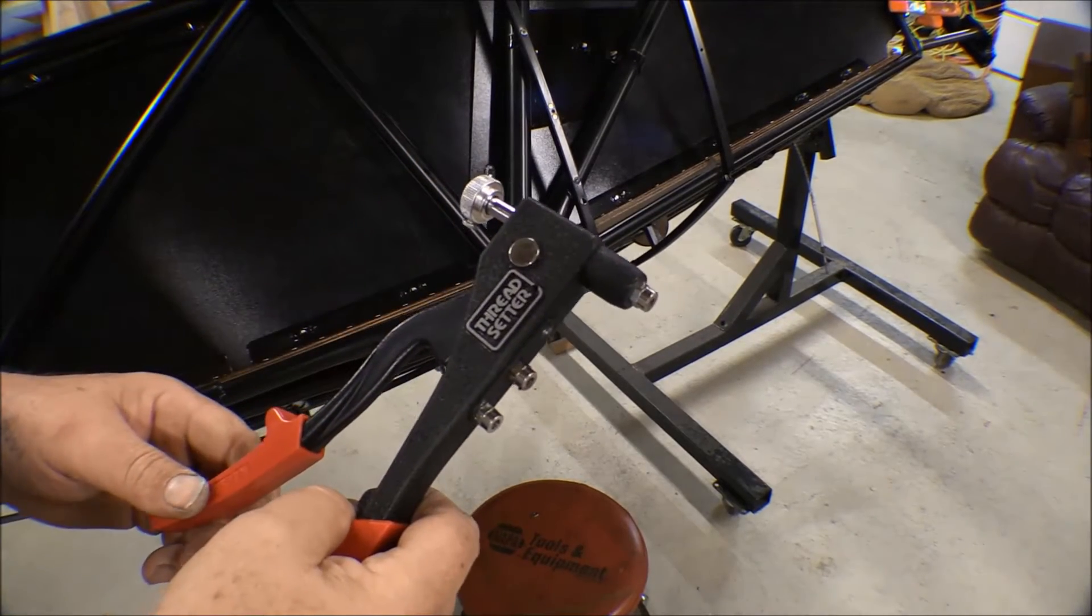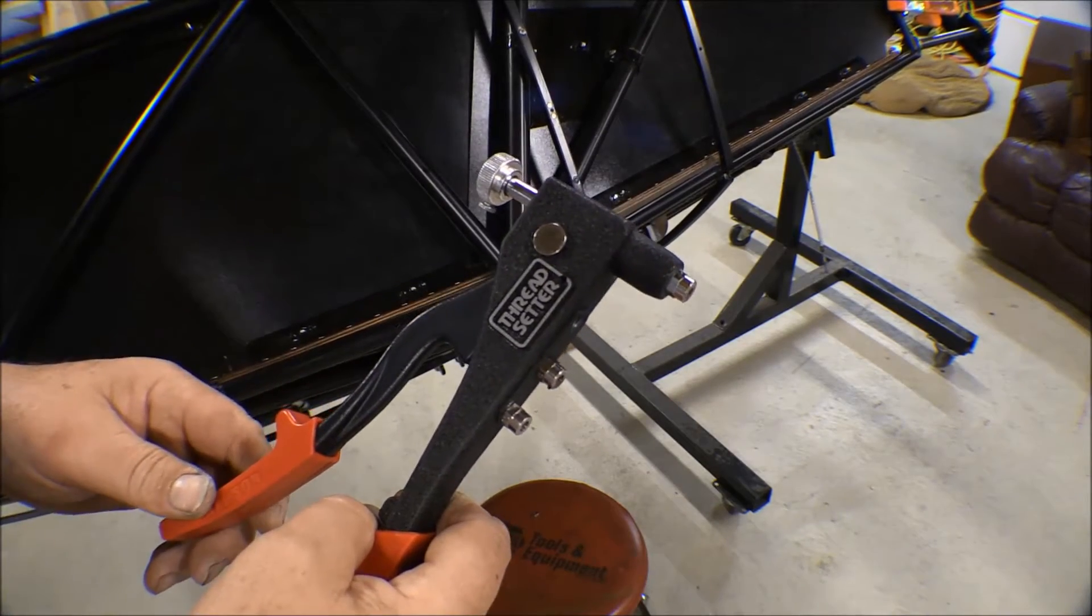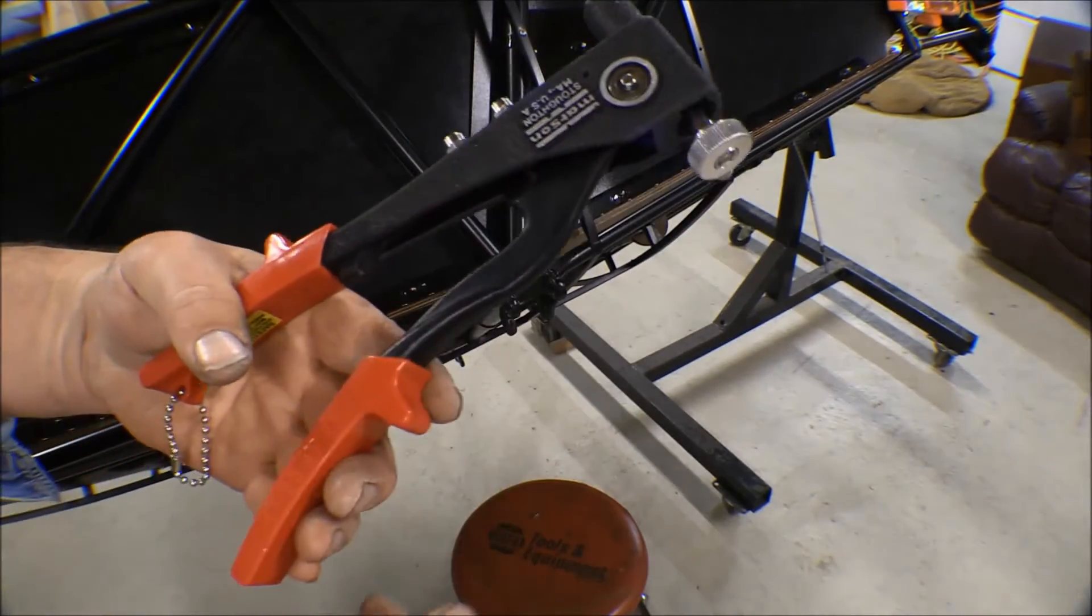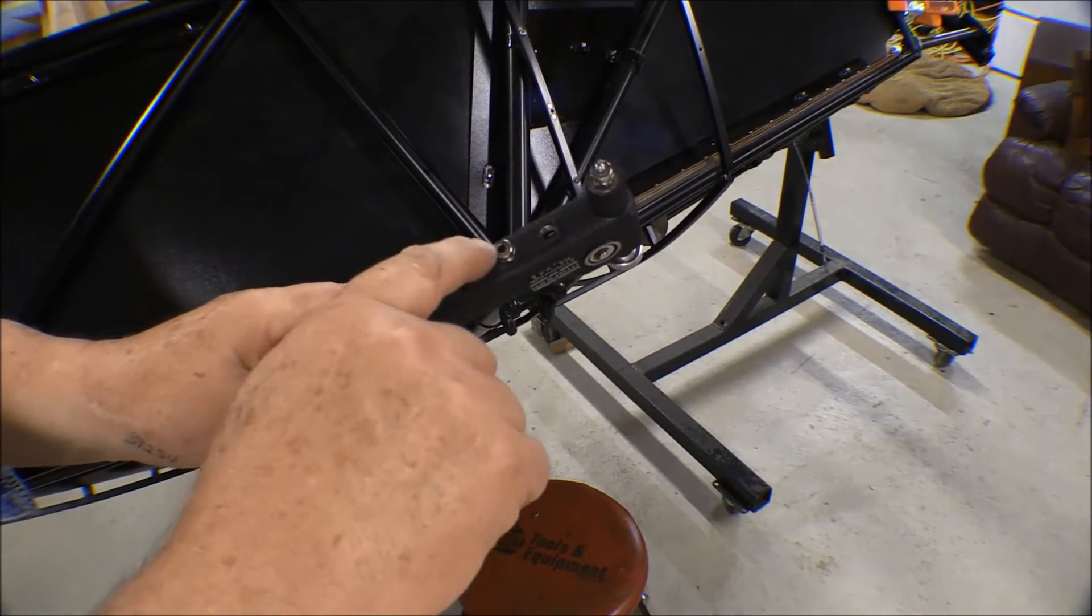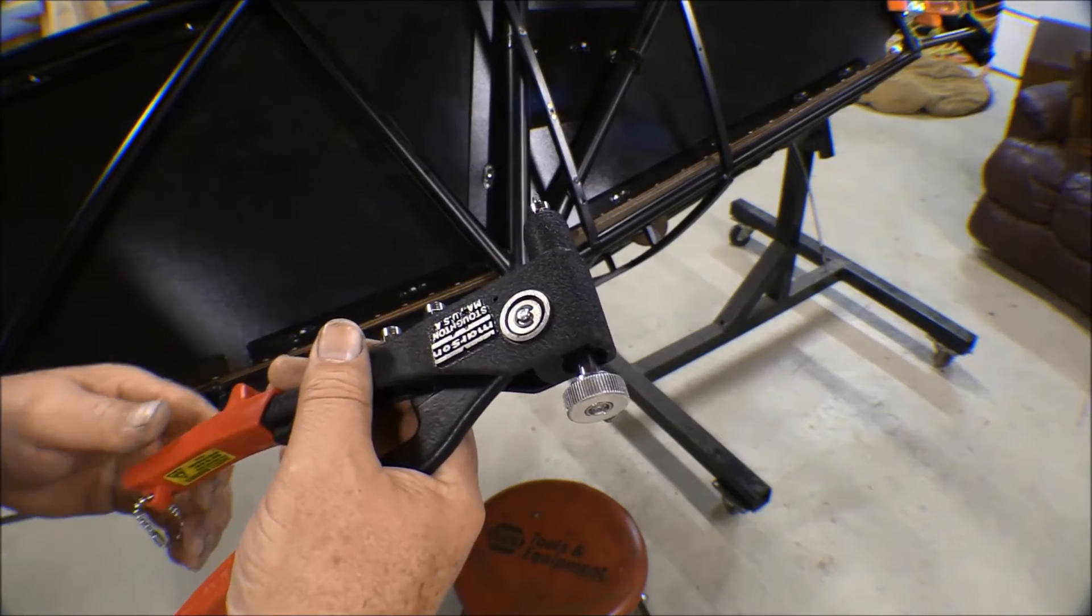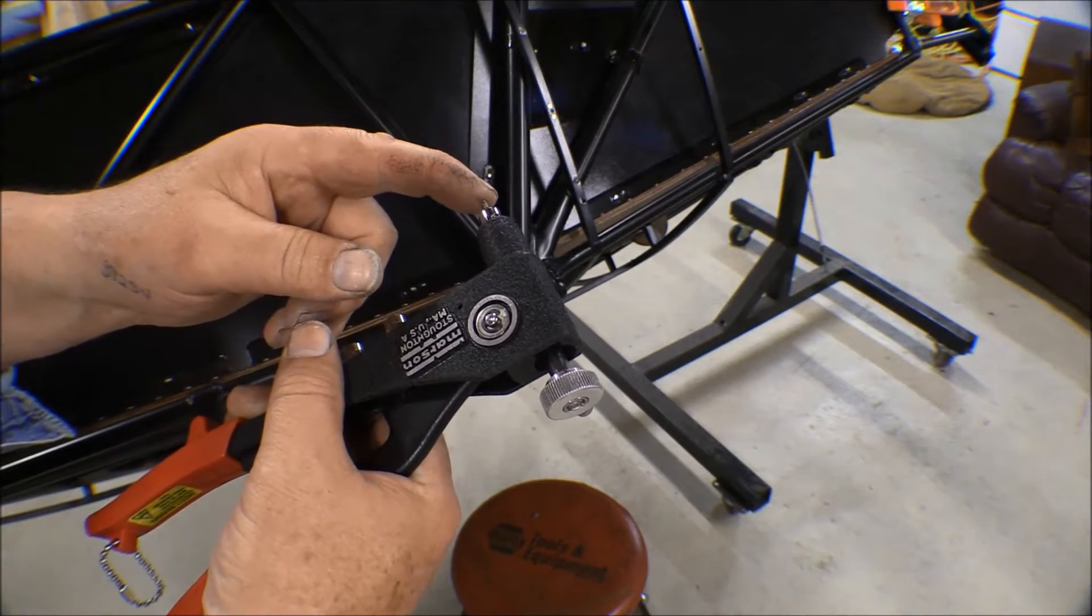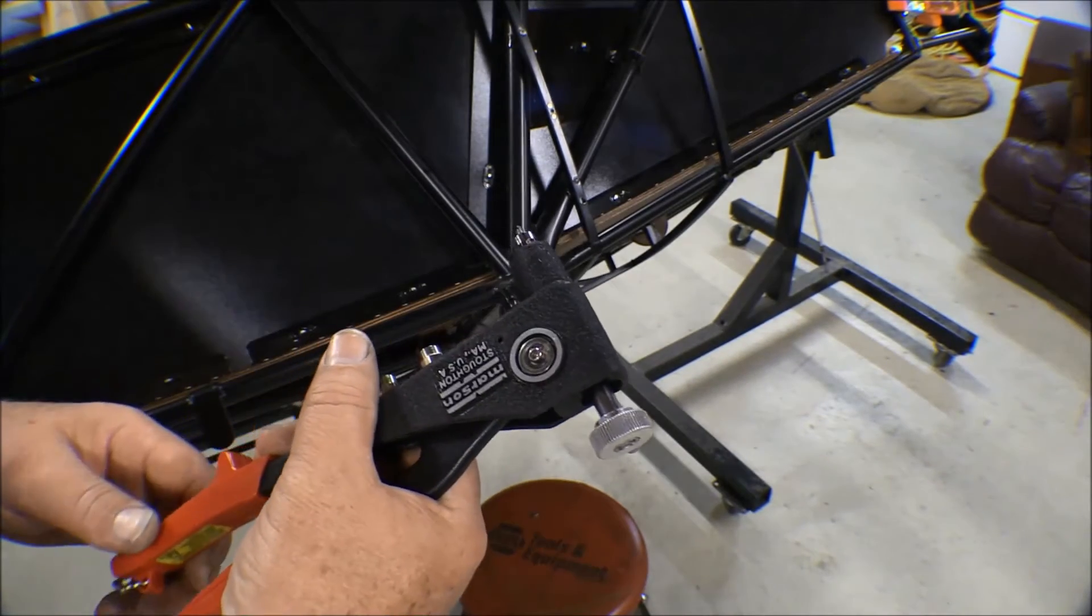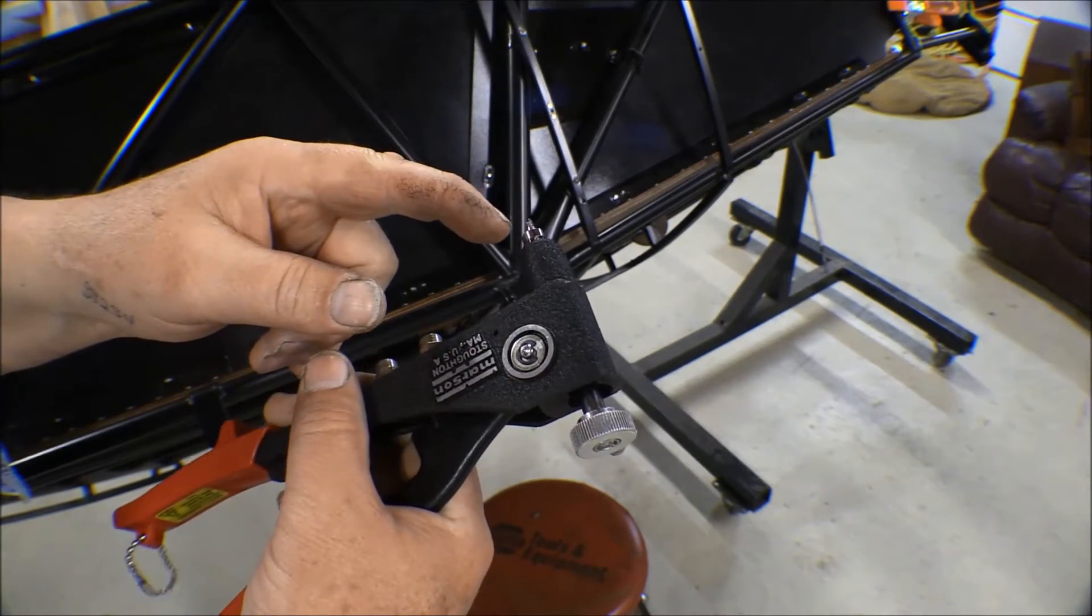I've set quite a few number 6 nutserts in here and I used this setter tool, a Marson thread setter tool. It works pretty good, like a pop rivet gun. It has different size mandrels for the different sizes of threads of nutserts. I was using 6-32s, there's 8-32s, 8-24s, 10-32s and 10-24s and so on.